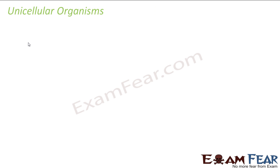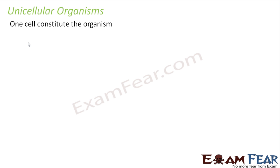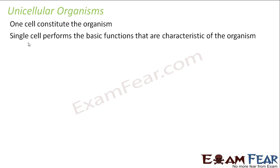In unicellular organisms, one cell constitutes the entire organism. That means in the entire body of the organism there is just one cell, and that one cell alone constitutes both the structure and function of the organism. A single cell performs all the basic functions — you don't have some cells for digestion, some for ingestion; just one cell performs everything required for the organism to survive.